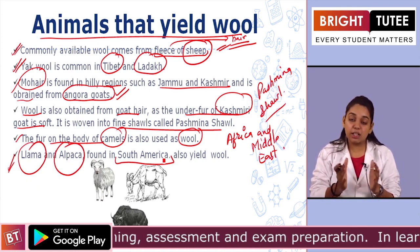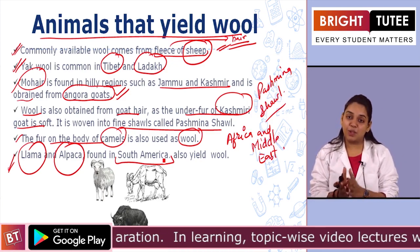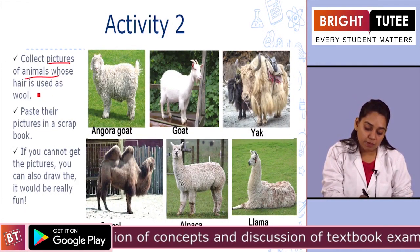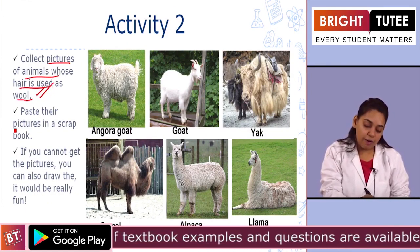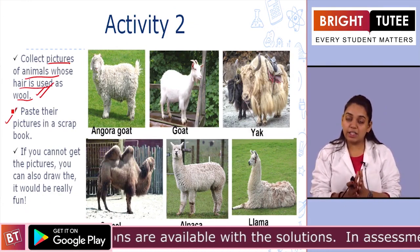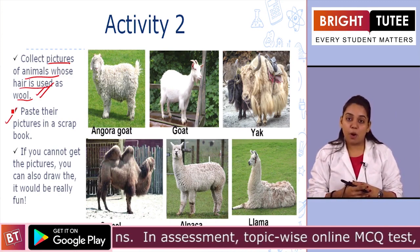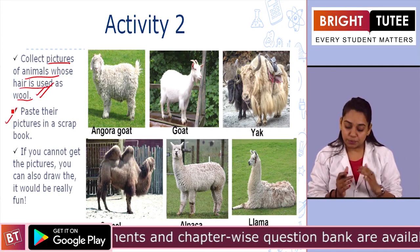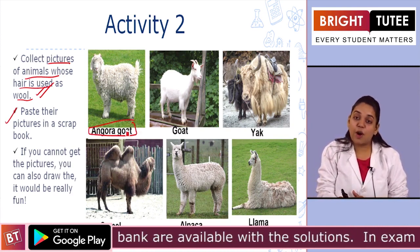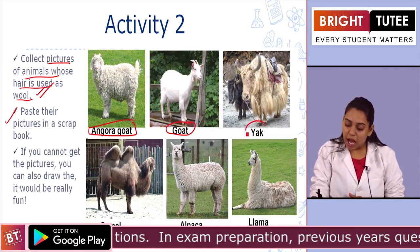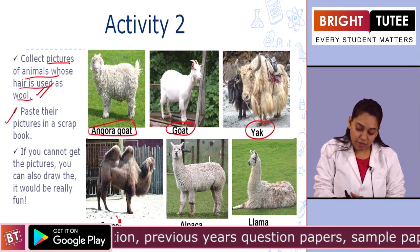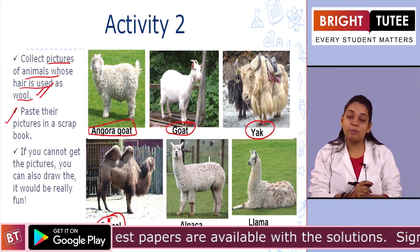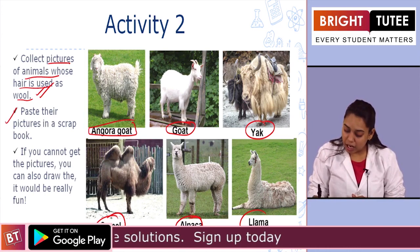Let us now do an activity to make learning about these animals easier. In this activity, you will collect pictures of the animals whose hair is used as wool, paste their pictures in your scrapbook. If you cannot find these pictures, you can download them from the internet or draw them on your own — it will be a fun activity and you can learn the names of all the animals that yield wool. Some examples are Angora goats from Jammu and Kashmir, yak from Ladakh and Tibet, camels from Gujarat and Rajasthan in India or Middle East and Africa, and Alpaca and Llama from South America.